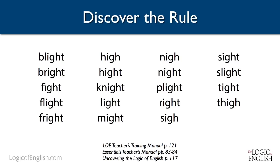Let's discover another spelling rule. You can find the word list in your teacher's training manual on page 121. Take a few moments to underline the three-letter 'igh' phonogram, then think about when three-letter 'igh' is used. You may have discovered that three-letter 'igh' is used only before the letter T and at the end of the word.